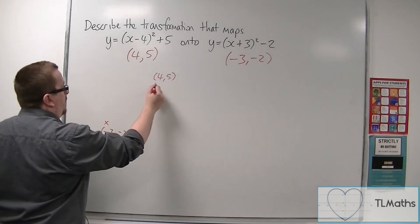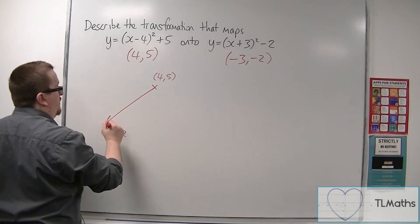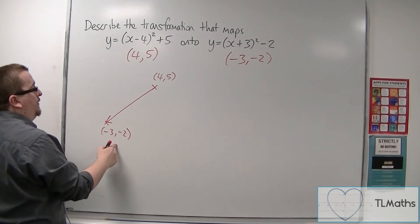And so we want the vector that will get me from 4, 5 to minus 3, minus 2.